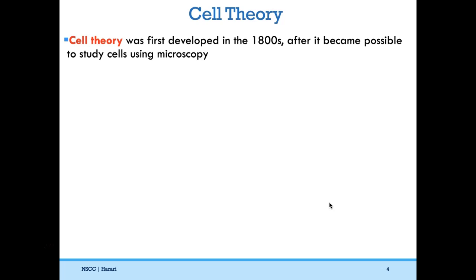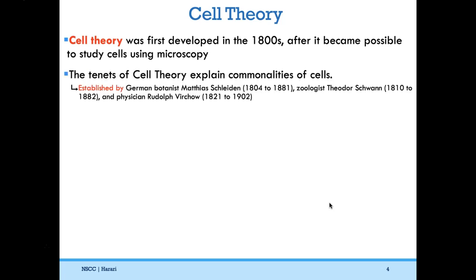It wasn't until cell theory was first developed in the 1800s that we really began to understand what cells are and that living things are all made of cells. Once we can use microscopes, we can understand what living things look like on a microscopic scale. The tenets of cell theory explain commonalities of all cells. Cell theory was established independently by a group of German scientists: botanist Schleiden, zoologist Schwann, and physician Virchow.